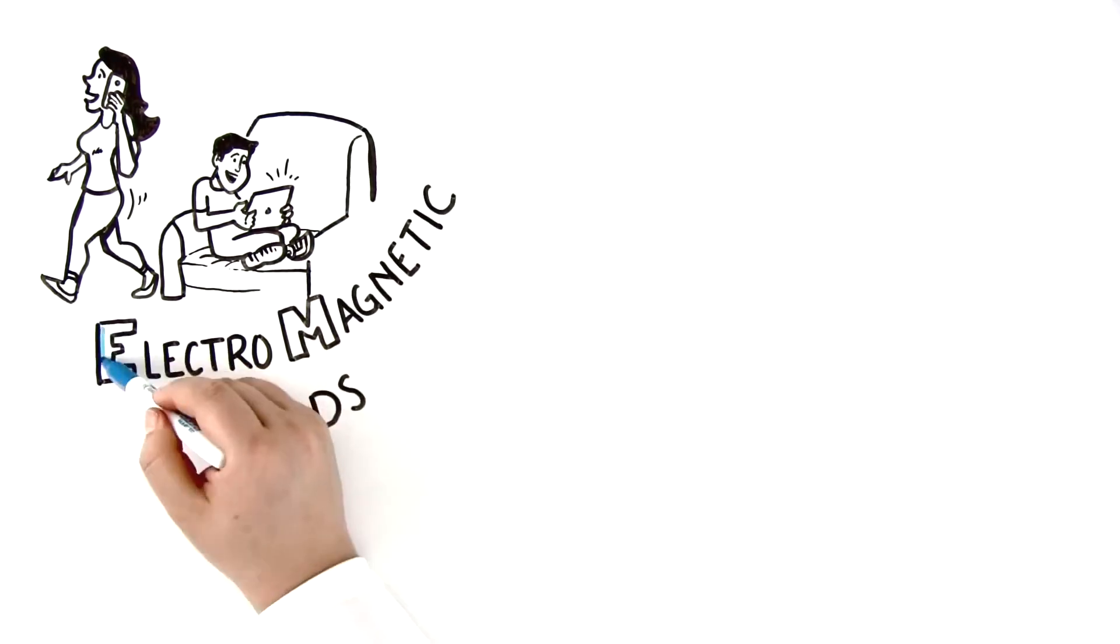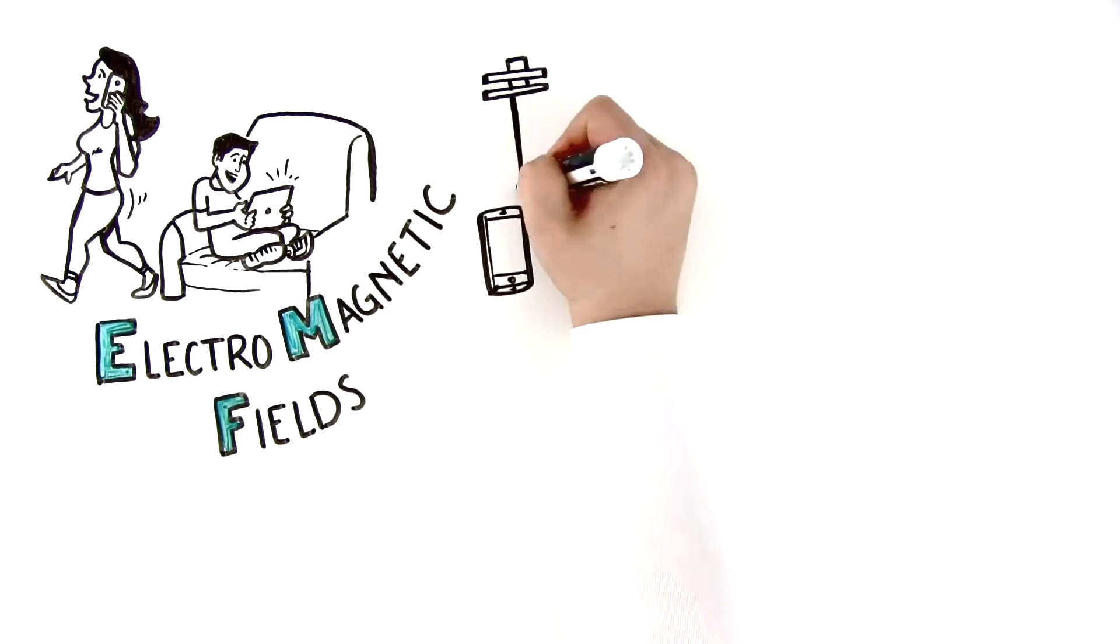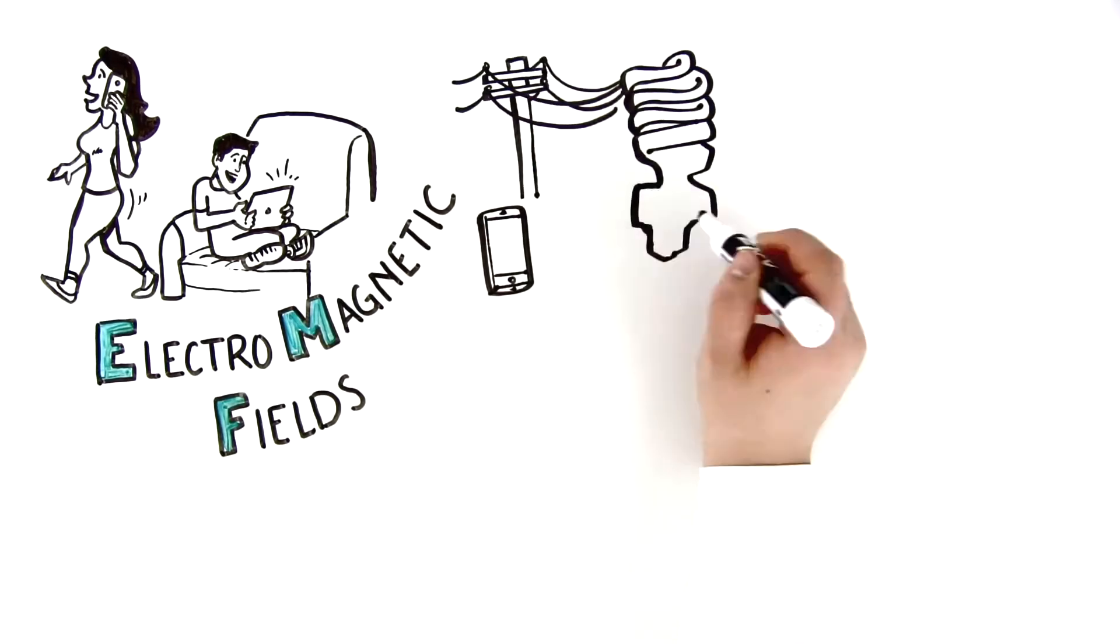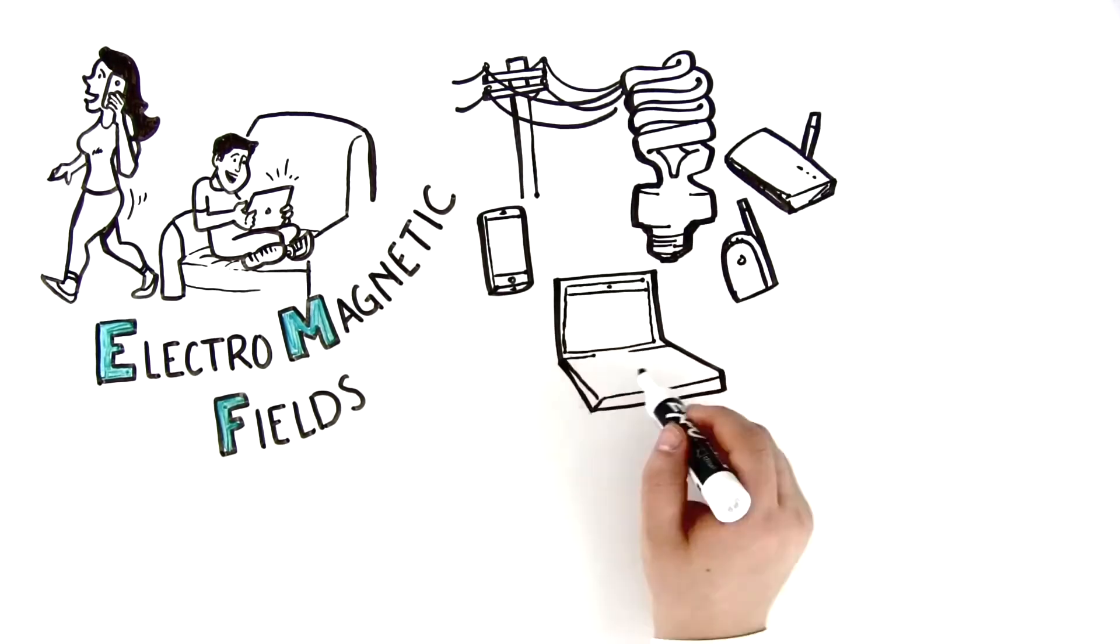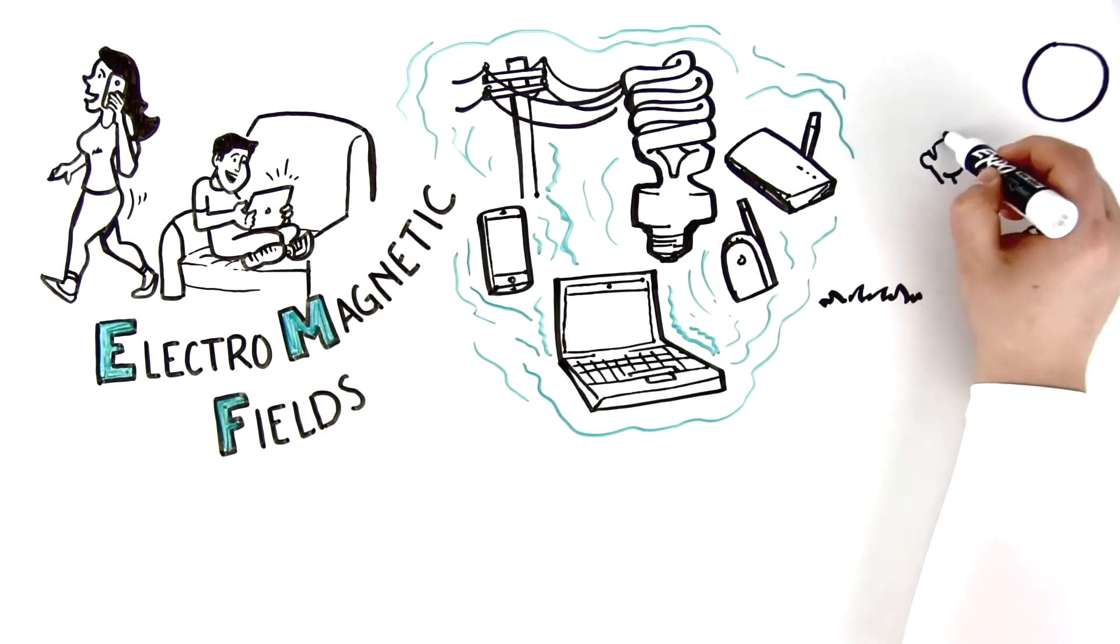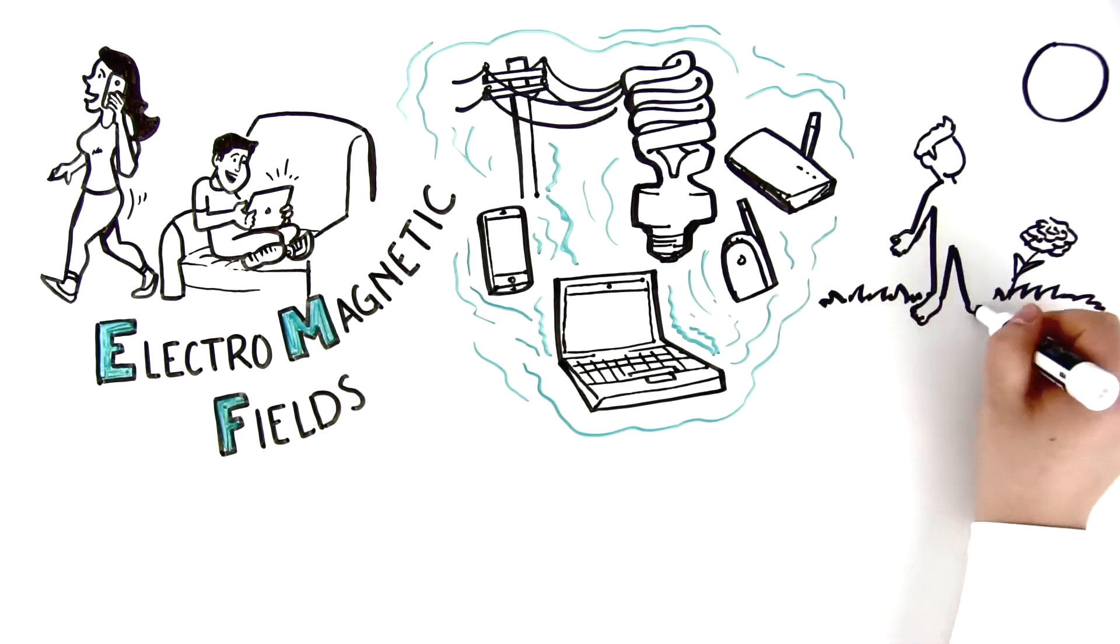Electromagnetic fields, or EMFs. Everything from our cell phones to our computer monitors emit unnatural EMFs. The sun and earth emit EMFs too, but natural EMFs.